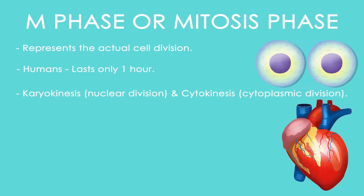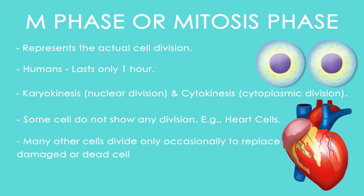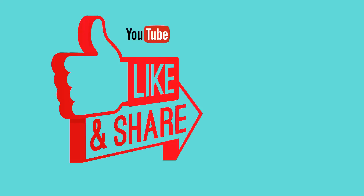Some interesting facts: some cells do not divide, such as heart cells. Many other cells divide only occasionally to replace damaged or dead cells. Cells that do not divide further leave the G1 phase and enter an inactive stage called the quiescent stage, or G0 stage. Such cells remain metabolically active but do not proliferate.